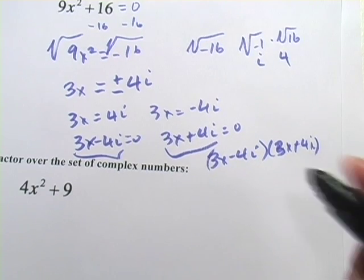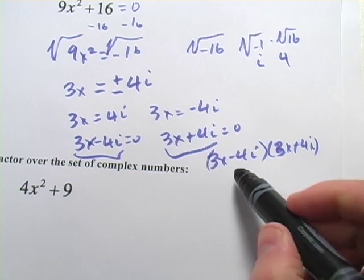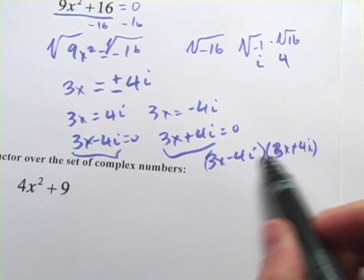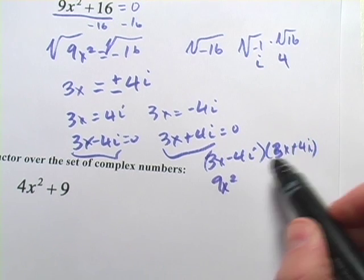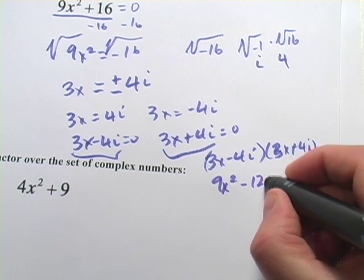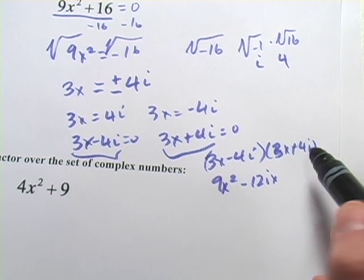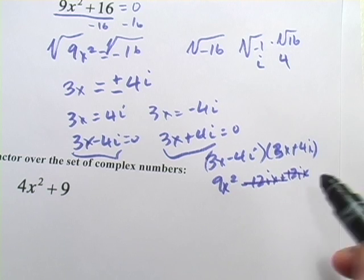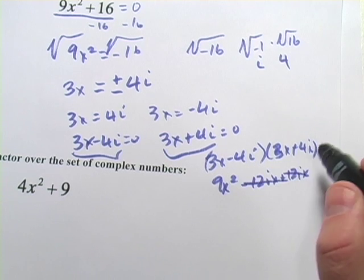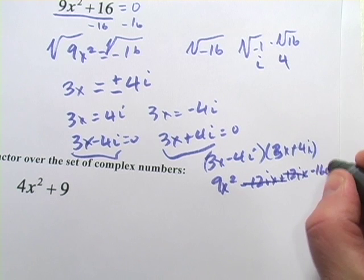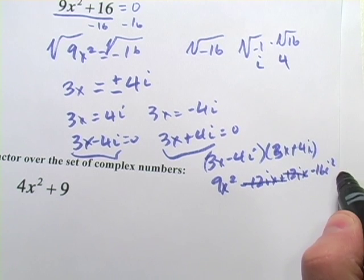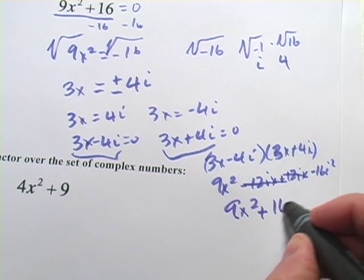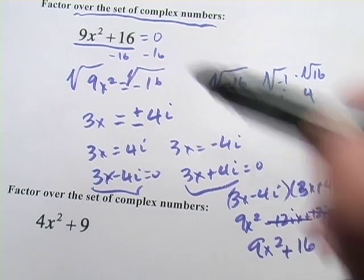Now, that might seem a little bit non-intuitive, but if you want to check that these are really the factors, all you have to do is FOIL this. 3x times 3x is 9x squared. Negative 4i times 3x is negative 12ix. 3x times positive 4i is positive 12ix. So you can see these two terms are going to disappear. And then negative 4i times 4i is negative 16i squared. What's i squared? i squared is negative 1, so negative 1 times negative 16 is positive 16. And you get 9x squared plus 16 — and voilà, that is what we started with.